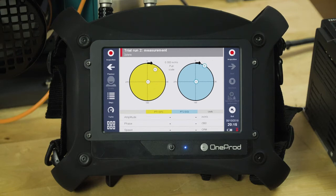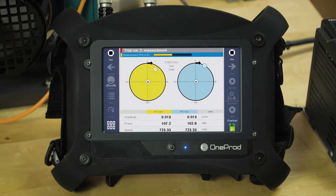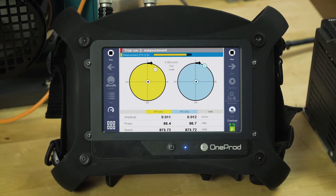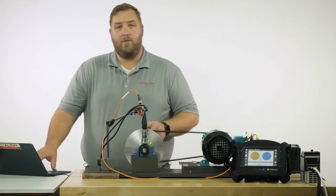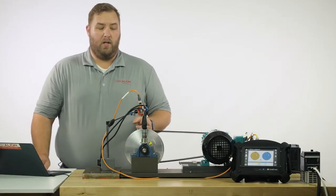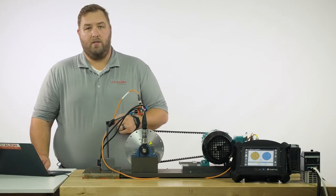Fan comes to full speed. When the fan stops, you'll remove the trial weight from plane one and attach the same trial weight to plane two.